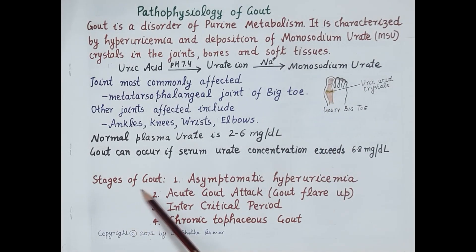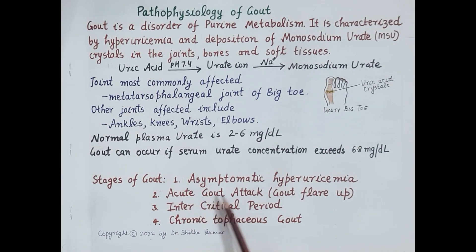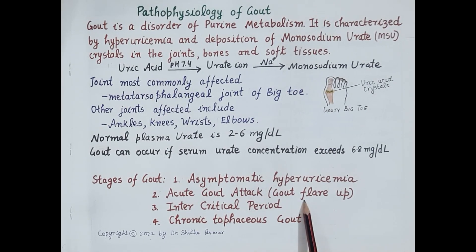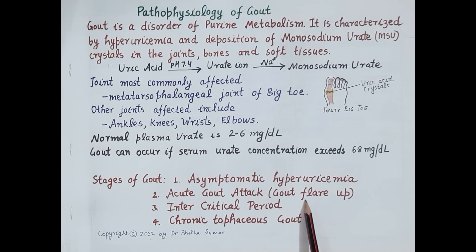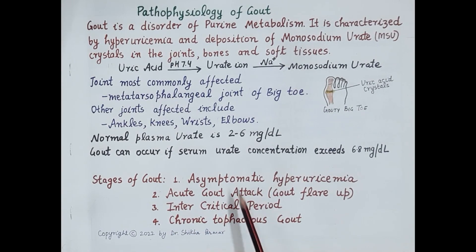Gout is described in four distinct stages: asymptomatic hyperuricemia, then acute gout attacks characterized by flare up of gout where intense symptoms are seen, then the intercritical period, and then chronic tophaceous gout. Now let us understand all these stages one by one in detail.